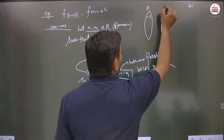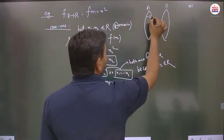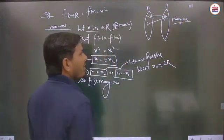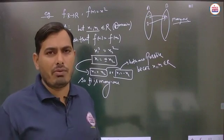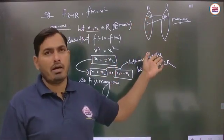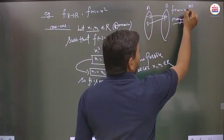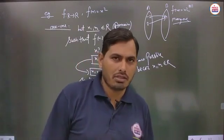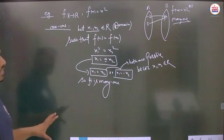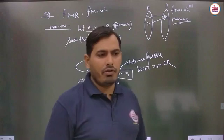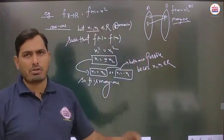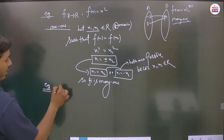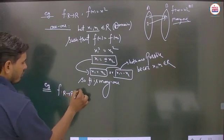Since both x₁ = x₂ and x₁ = −x₂ are possible, the function is many-one. For example, f(−2) = 4 and f(2) = 4, so two different domain elements have the same image. Therefore, f: ℝ→ℝ, f(x) = x² is many-one.